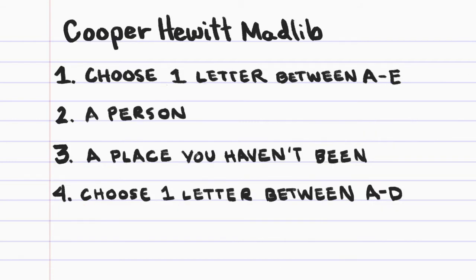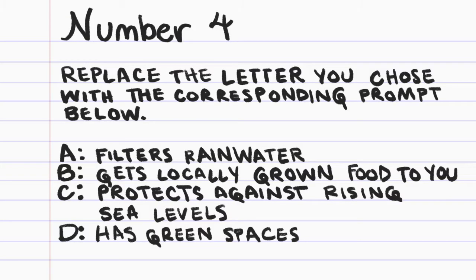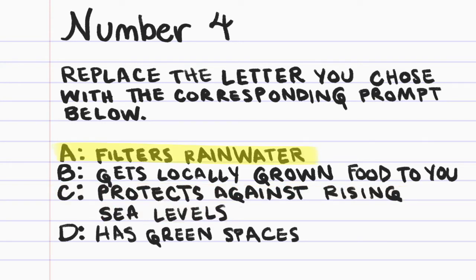Now go down to number four and do the same thing with whichever letter you chose for number four — replace it with the word that you see on the screen. For example, if you wrote letter C next to number four, you would now write 'protects against rising sea levels.' If you chose letter A next to number one, you would say 'filters rainwater.'